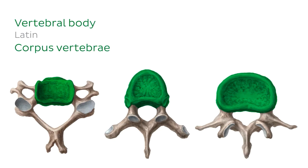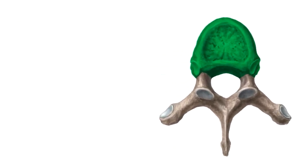Now let's have a look at our lumbar vertebra. We can see that the lumbar vertebra is kidney-shaped and quite large. And these characteristics allow us to distinguish between thoracic and lumbar vertebrae.